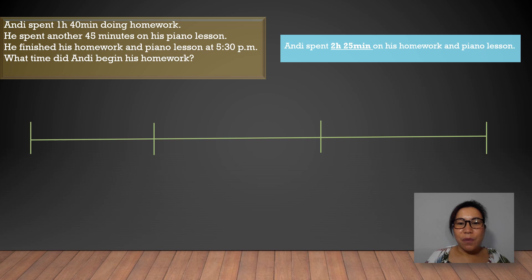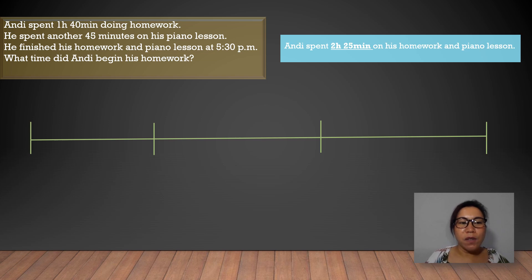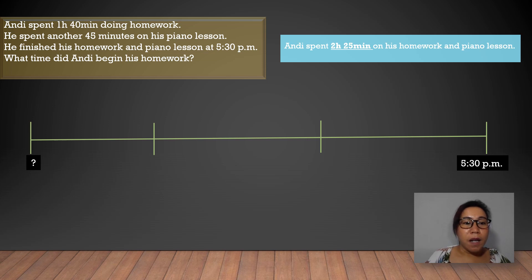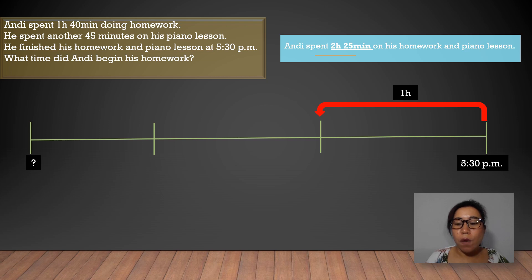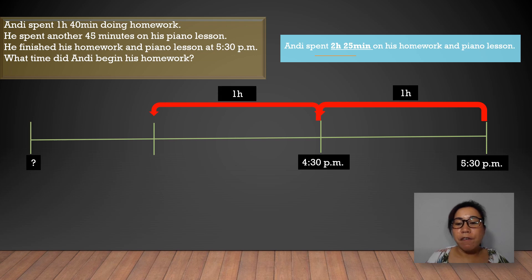Now we know that Andy spent 2 hours and 25 minutes on his homework and piano lesson. We want to know what time Andy began his homework. We know that he ended at 5:30 PM. Given the 2 hours and 25 minutes, we will visualize the face of the clock and count back by 1 hour. 1 hour before 5:30 PM is 4:30 PM. And another 1 hour before 4:30 PM is 3:30 PM.